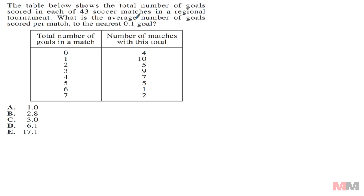The table below shows the total number of goals scored in each of 43 soccer matches in a regional tournament. What is the average number of goals scored per match, rounded to the nearest tenth of a goal? Before I do any word problems, I always like to break it down by taking side notes. This says average number of goals per match, so I'm just going to write the word goals and the word matches.